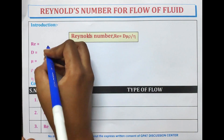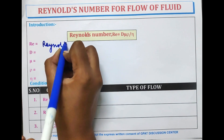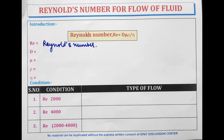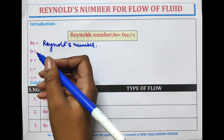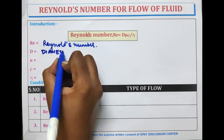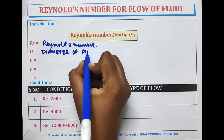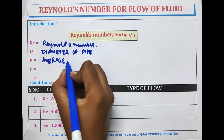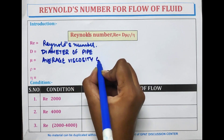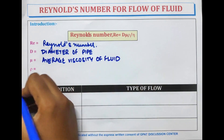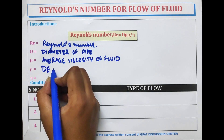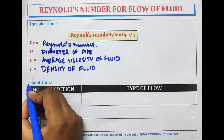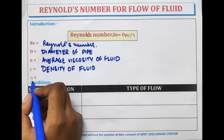The formula to calculate Reynolds number is as follows: RE stands for Reynolds number, d stands for diameter of pipe, mu for average viscosity of the fluid, rho for density of the fluid, and another term for the viscosity of fluid.